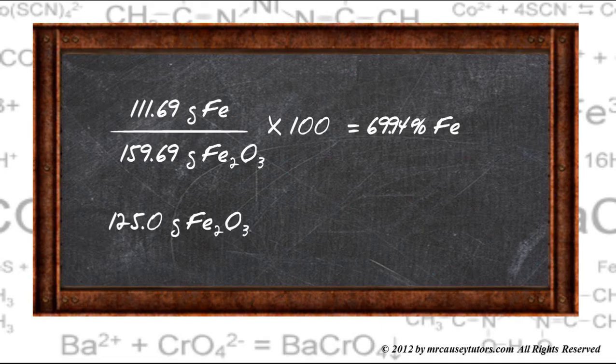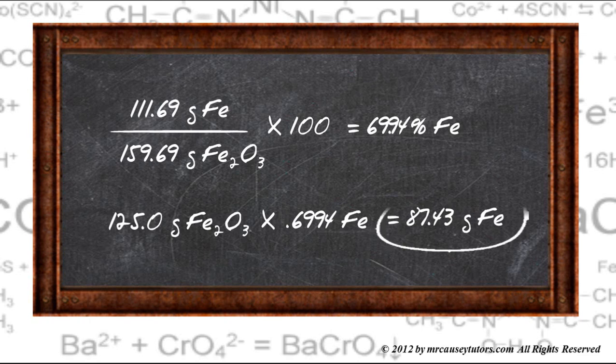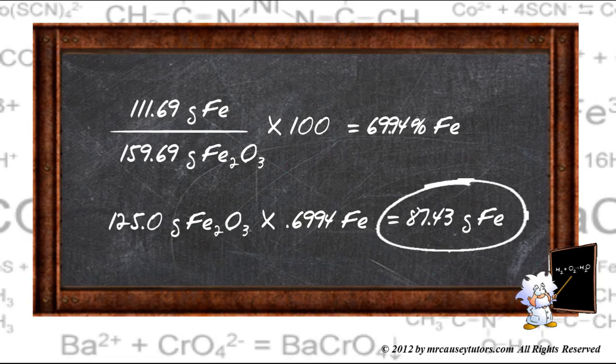So, take the total amount of iron three oxide that we had, 125 grams, multiply it by the percent, and now notice we have to change it to a decimal. That gives us 87.43 grams of iron. And so in 125 grams of iron three oxide, there are 87.43 grams of iron. And I think our sig figs are right there, but if they aren't, you can check them. I believe we have four sig figs.